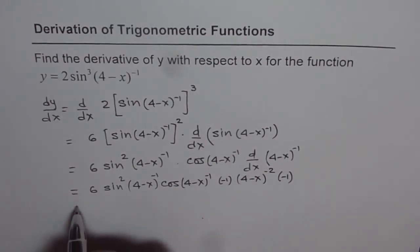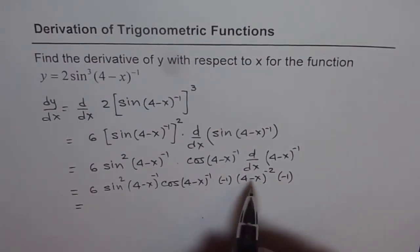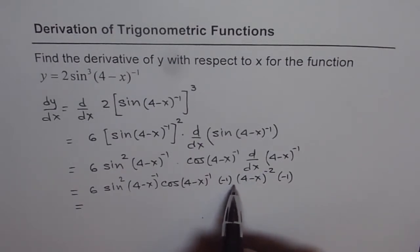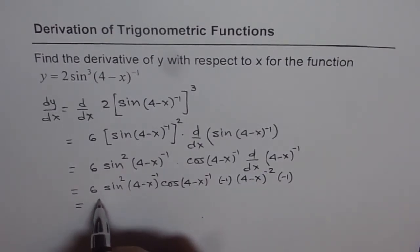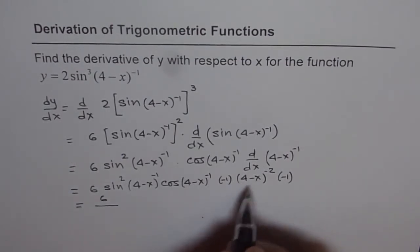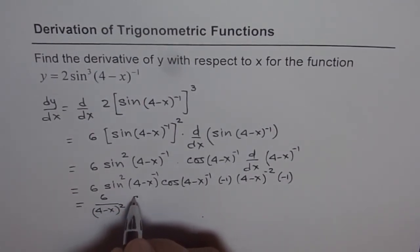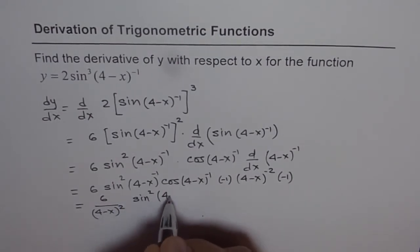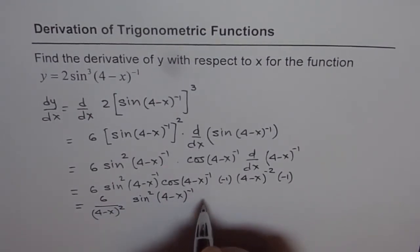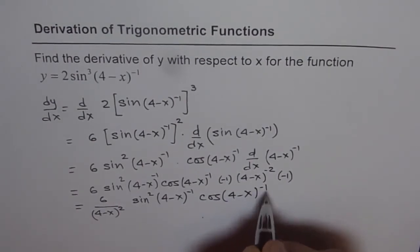Now let us multiply these numbers to get the final answer. Minus times minus makes it plus. So we get plus, and 4 minus x to the power of minus 2 can come to the denominator. So we can write this as 6 over 4 minus x squared, times sin squared of 4 minus x to the power of minus 1, times cos of 4 minus x to the power of minus 1.